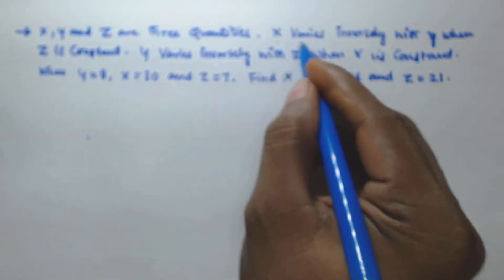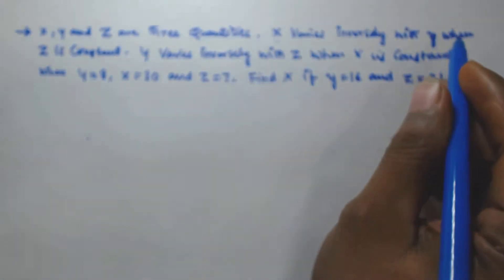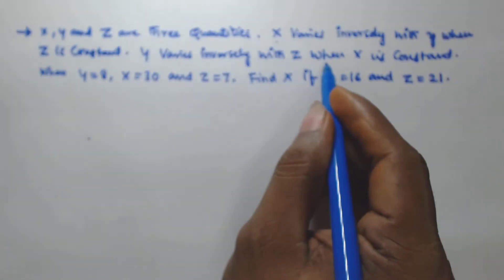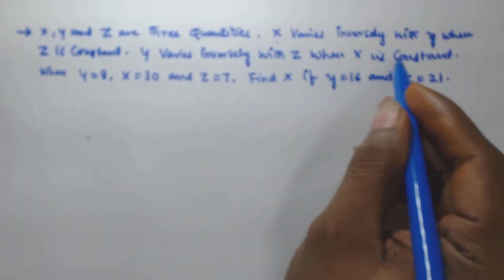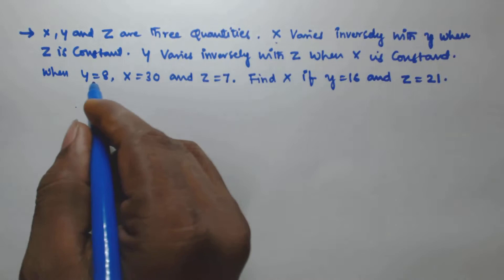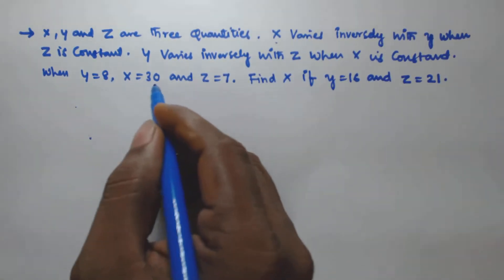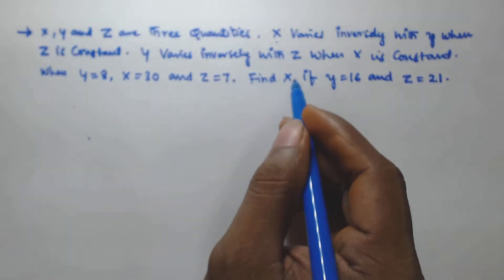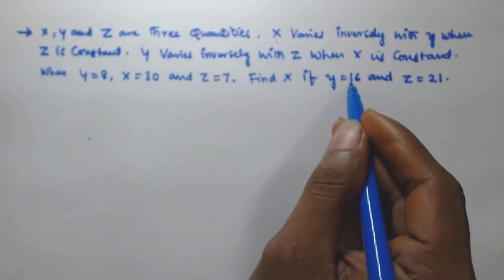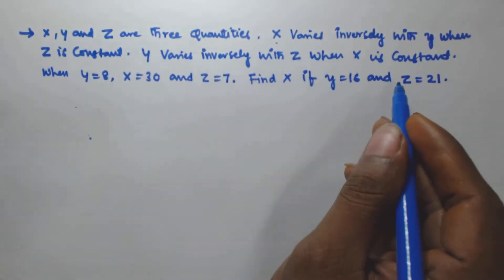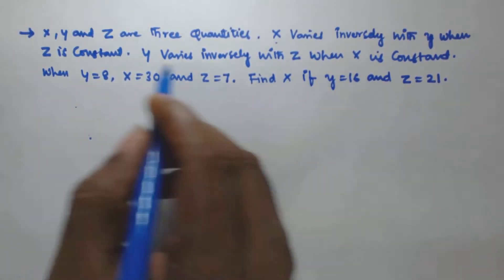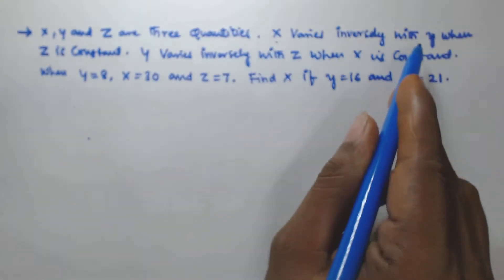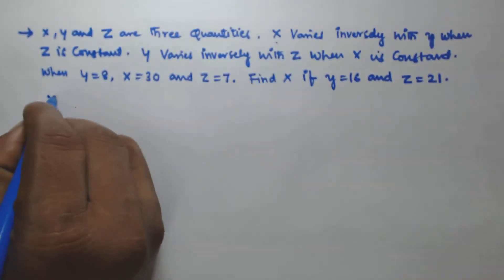So it is given that x, y, and z are three quantities. x varies inversely with y when z is constant, and y varies inversely with z when x is constant. When y is equal to 8, x is equal to 30, and z is equal to 7, we have to find the value of x if y is equal to 16 and z is equal to 21.